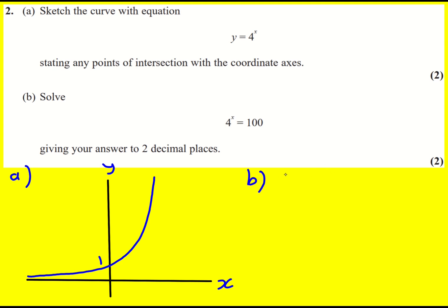Solve 4 to the x equals 100. What we can do is just use our knowledge of logarithms and straight away write down that x is equal to log to base 4 of 100. That's how logarithms work, it's the base to the power of this, 4 to the x, that equals 100. So you can go straight there.